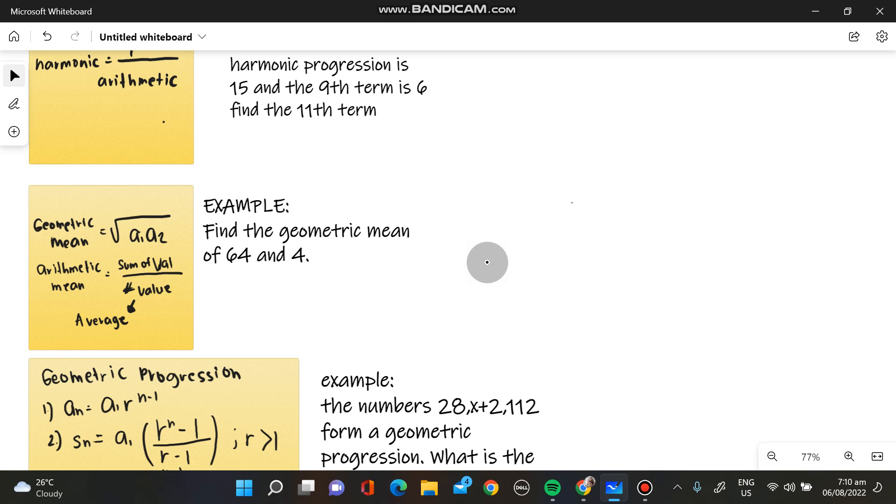The geometric mean has two formulas. We have the square root of A sub 1 multiplied by A sub 2. And also, we have the arithmetic mean, which is equivalent to the sum of value over the number of value, which is just taking the average.